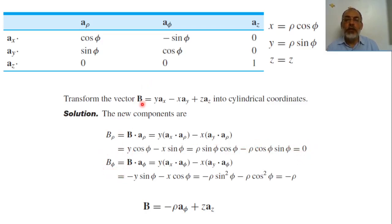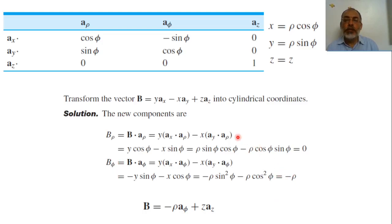The phi component is B·a_phi = y·(−sin(phi)) + (−x)·cos(phi). Substituting y = rho·sin(phi) and x = rho·cos(phi): −rho·sin²(phi) − rho·cos²(phi) = −rho. So the phi component is −rho. The z component is the same z. Therefore, the transformation of vector B into cylindrical coordinates is: 0·a_rho − rho·a_phi + z·a_z.